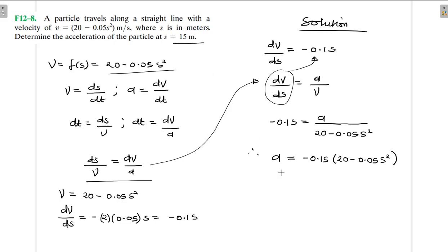This is a function of s. Now for a(15) is going to be equal to -0.1 times 15, then (20 - 0.05 times 15²).